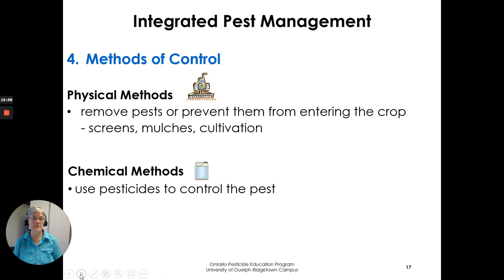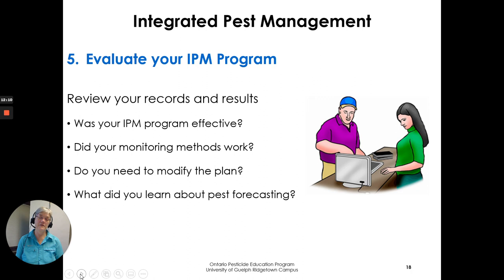Having a plan in place, you execute your plan and then review the records and your results. What pests did you have? Was your IPM program effective in controlling them? Did you go out and monitor the crop as frequently as you should? Would you have to modify that plan? You can review that with pest specialists in your area.